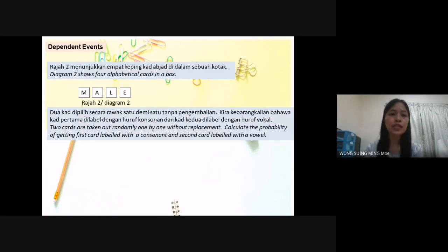For dependent event, diagram 2 shows 4 alphabetical cards in a box: M-A-L-E. 2 cards are taken out randomly one by one without replacement. Calculate the probability of getting 1st card labelled with a consonant and 2nd card labelled with a vowel.